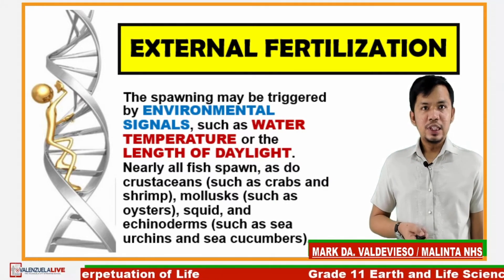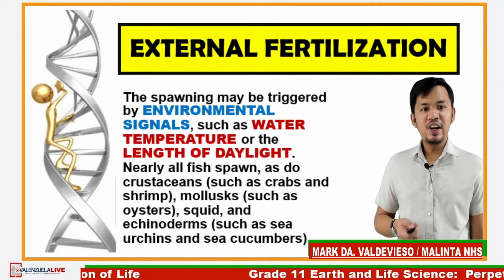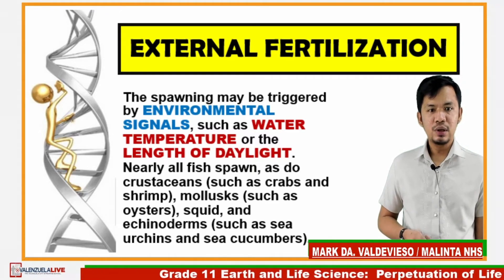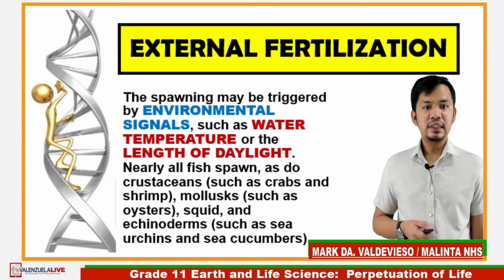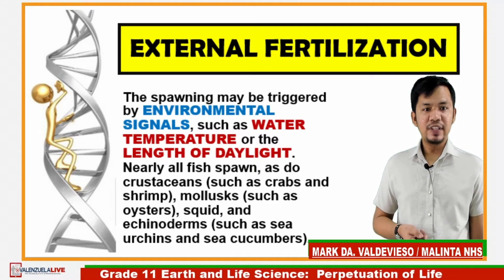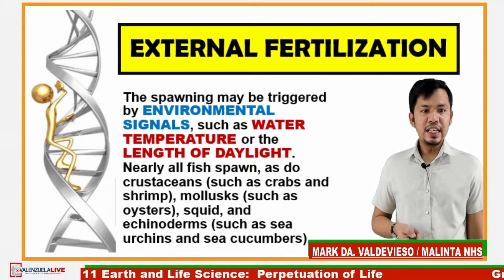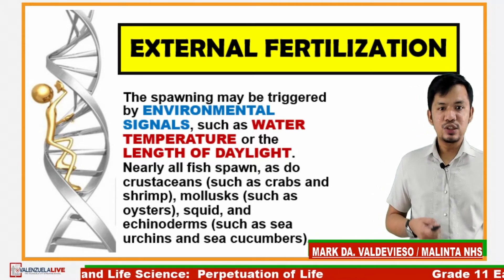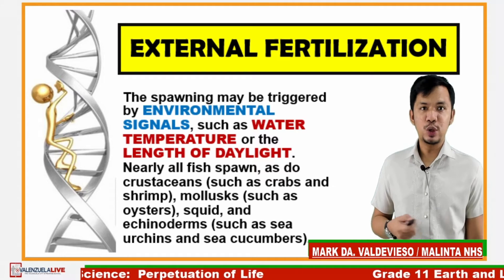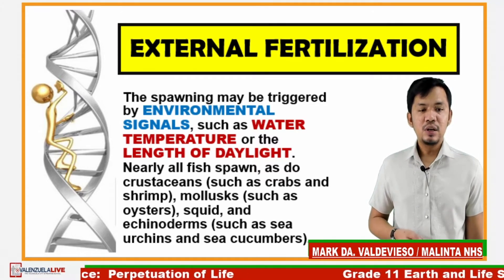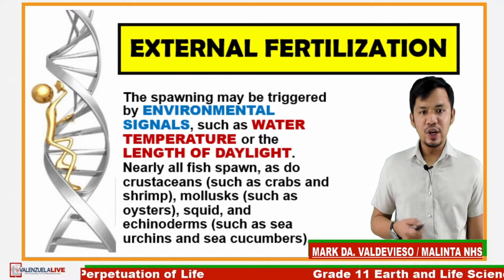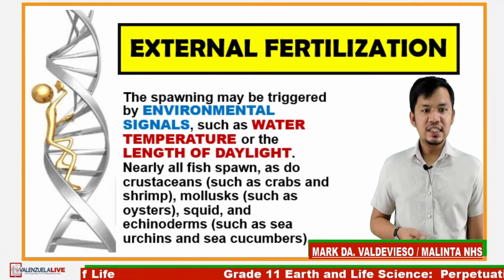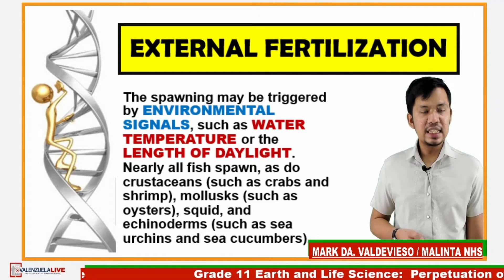Spawning may be triggered by environmental signals such as water temperature or the length of daylight. Nearly all fish spawn, as do crustaceans such as crabs and shrimps, mollusks such as oysters and squid, and echinoderms such as sea urchins and sea cucumbers.